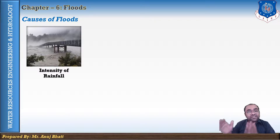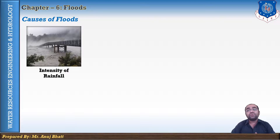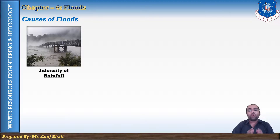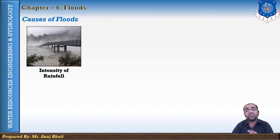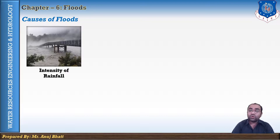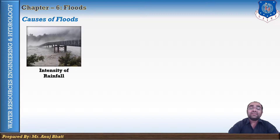If the rainfall is normal and the storm duration is short, surface runoff will flow smoothly through the tributaries and the river will not create any problem for downstream areas. But if the rainfall is very heavy and the storm duration is longer, the surface runoff will increase, may exceed the normal carrying capacity of the river, and overtopping of the river banks may occur, causing the surrounding area to get flooded.